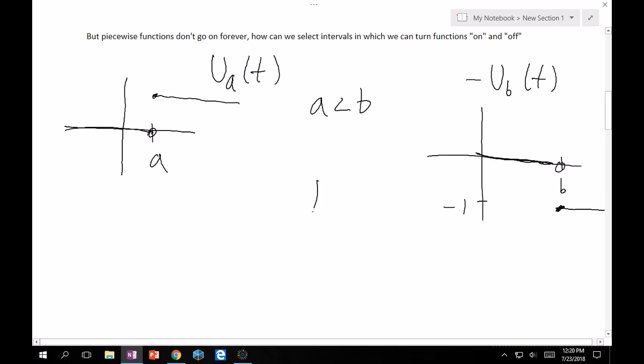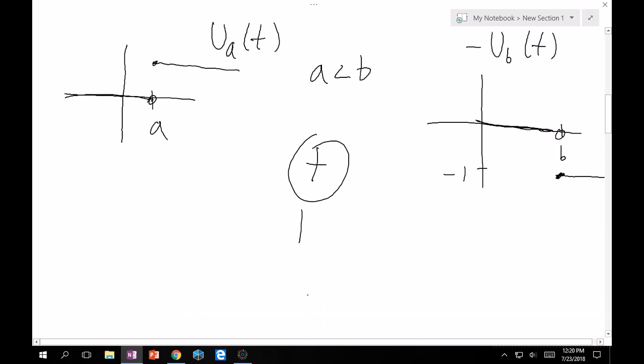Now, what if you add these two together? What would you get? The following is what you would get. You would get, this function would now be called ua of t minus ub of t. And what it would look like is between a and b, right? Because up until a, it's all 0. Because both a is less than b, and it's all 0 between the two of them. Between a and b, it's 1, right? Because, and this doesn't matter too much, the fact that this one's a hole and the other one's open. In terms of the integral, it doesn't matter too much. And so, that's 1.